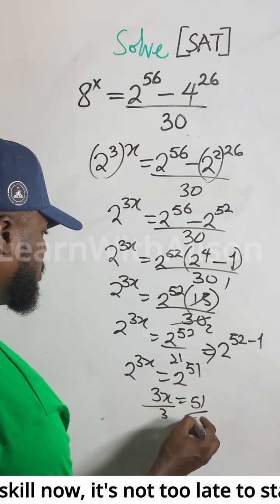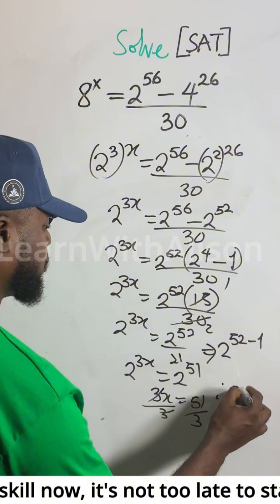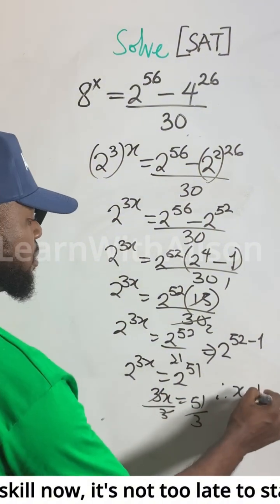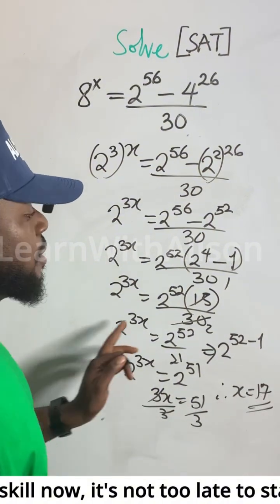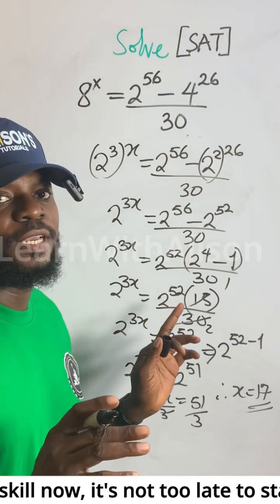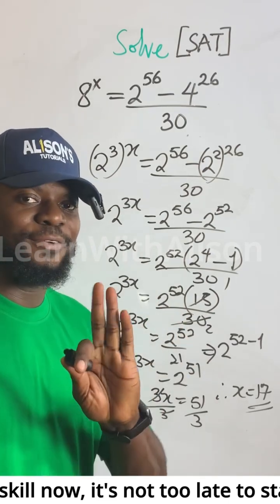Dividing both sides by 3, we get x equals 51 divided by 3, which is 17. That's the answer. I hope you found this video helpful. Please like and share, and if you need one-on-one sessions, hit my DM. Peace and love.